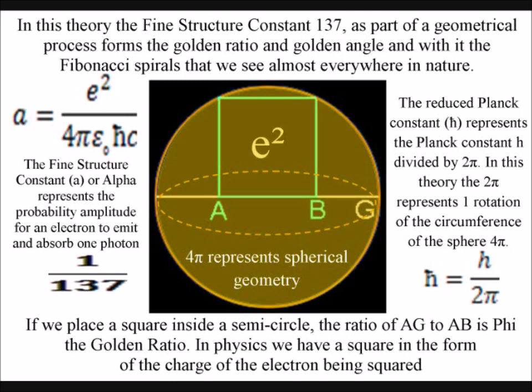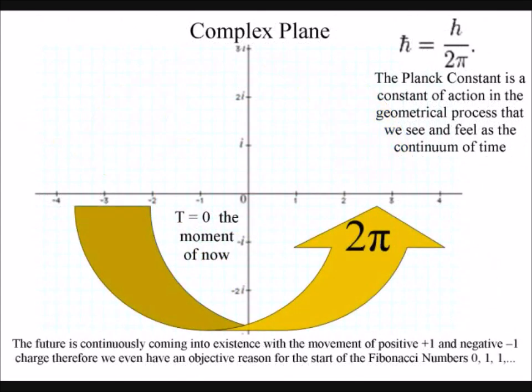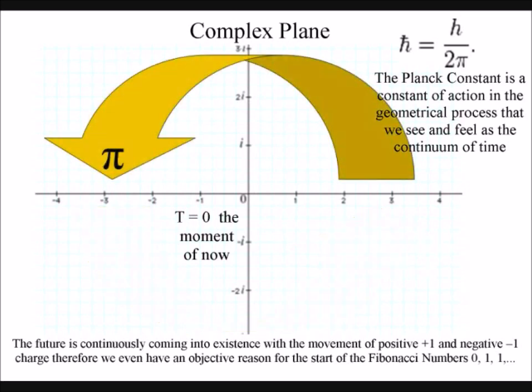We also have the Planck constant linked to 2π, representing one rotation of the sphere. This is quite a lot of geometrical information to draw a picture of what is actually happening.